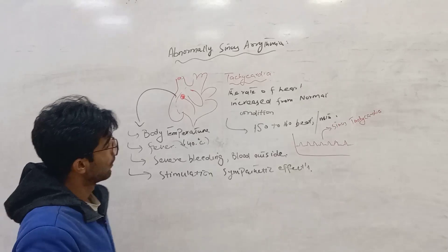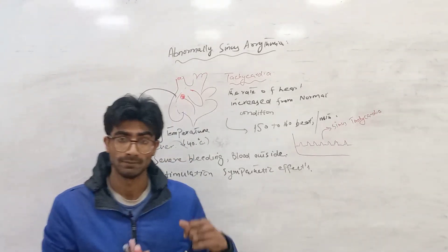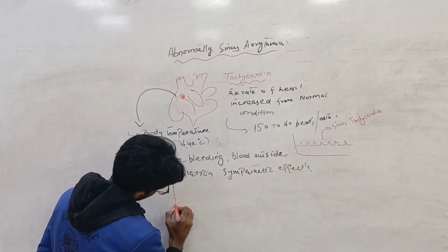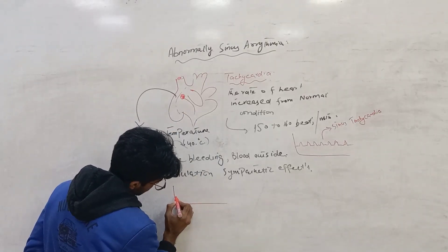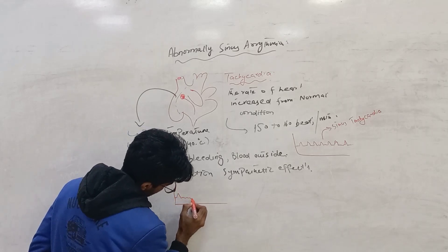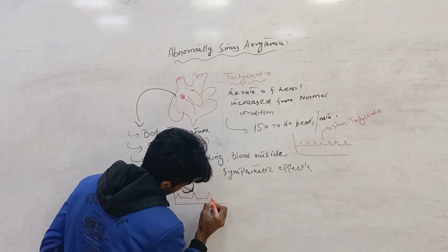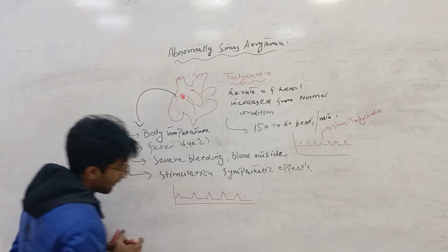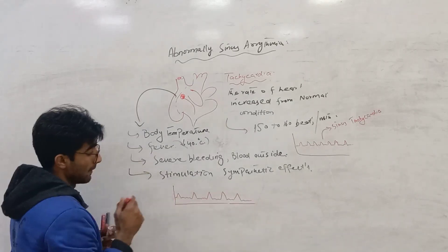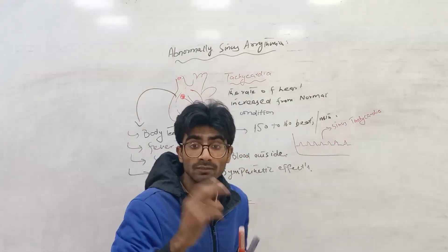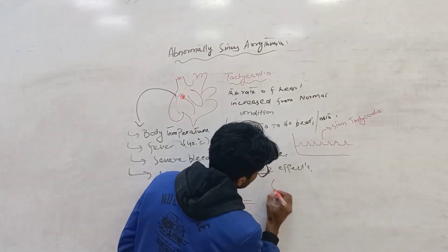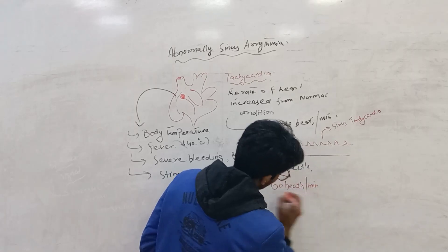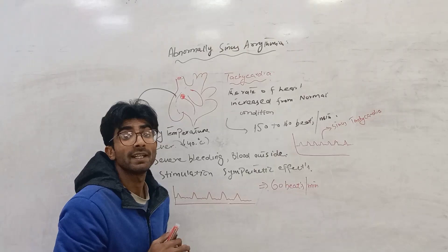Now, what is bradycardia? In bradycardia, the impulse is slower, and when the impulse slows down, the rate of heartbeat decreases to approximately 60 beats per minute. That is known as bradycardia.